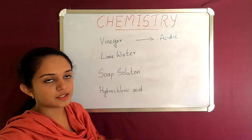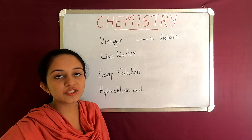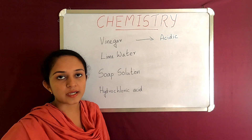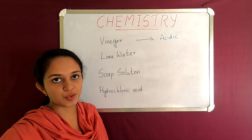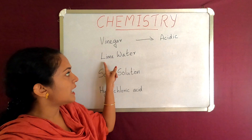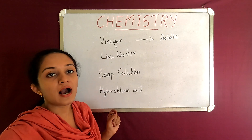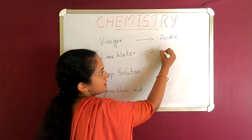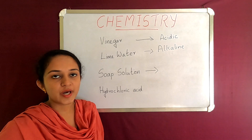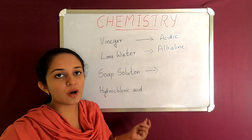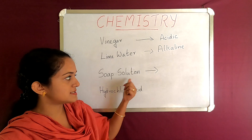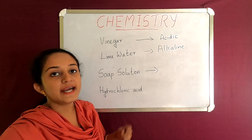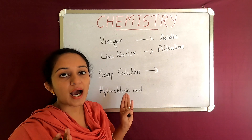Next is lime water. This is calcium carbonate. This is a litmus paper test. If you dip a litmus paper, the red color of the litmus paper will change to blue because lime water is alkaline. This is the soap solution. The soap solution is alkaline. So it will change the red litmus paper to blue color. If it changes to blue, it will be an alkaline substance.